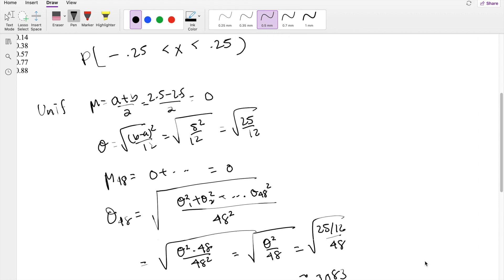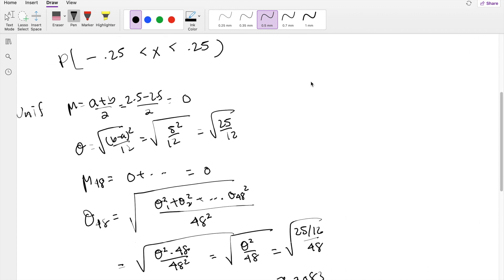So then I think we're ready to rock and roll. If we're trying to find a range between these, we just have to normalize it. So this is equal to negative 0.25 minus mean, which is 0, over standard deviation, which is 0.2083.